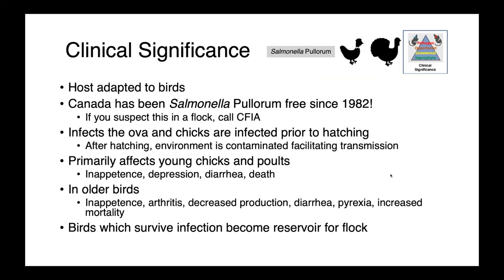Salmonella pallorum is a serotype adapted to birds, and we do not have it in Canada — we have been pallorum-free since 1982. If you ever suspect salmonella pallorum on a flock, the first thing you need to do is call the Canadian Food Inspection Agency, as this would have major implications for our poultry industry. Salmonella pallorum affects the ova and chicks are infected prior to hatching, contaminating the environment. It primarily affects young chicks and poults — we see inappetence, depression, diarrhea, and death. In older birds, we see decreased production, arthritis, fever, and increased mortality.